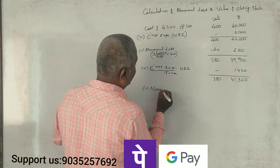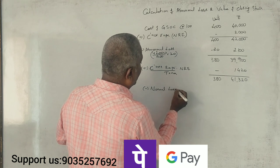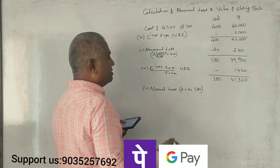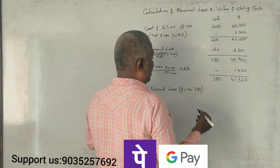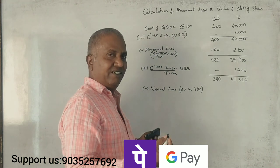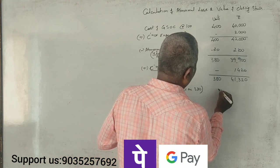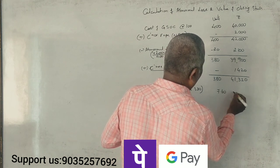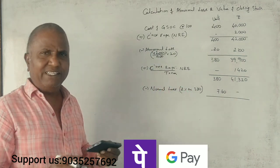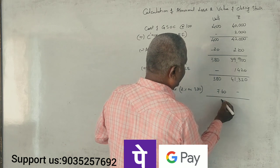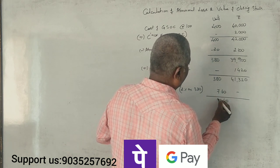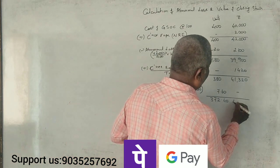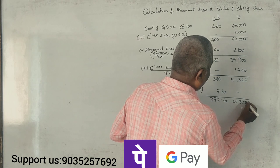Looking at the normal loss: 2% on 380 units equals 7.6 units. So the net units after normal loss are 372.4 units, with a cost value of ₹41,320.